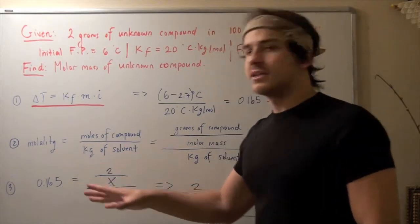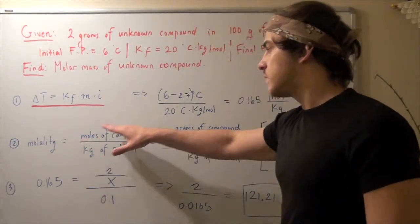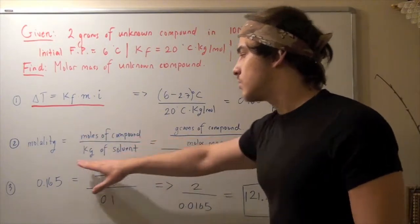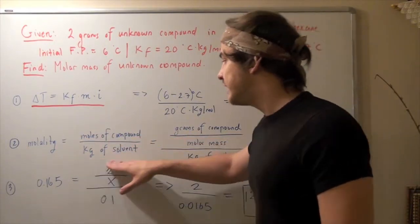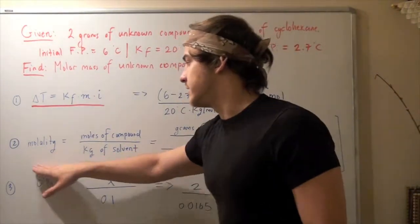Now, in the second step, let's look at the formula for molality. Molality equals moles of compound divided by kilogram of solvent. Now, we're given a kilogram of solvent, so we know that. We also know molality.